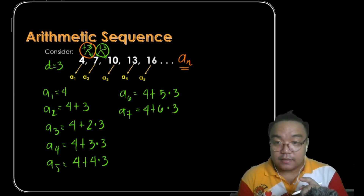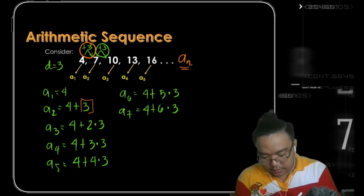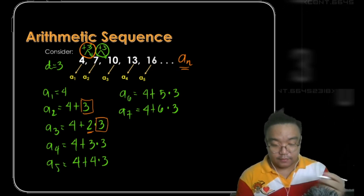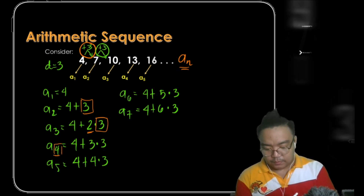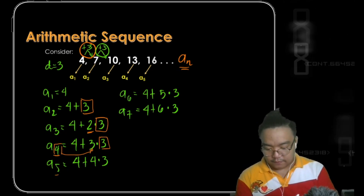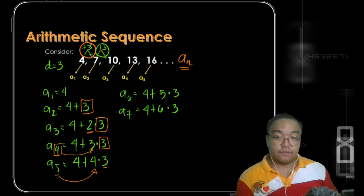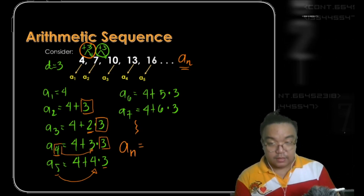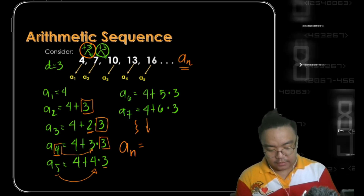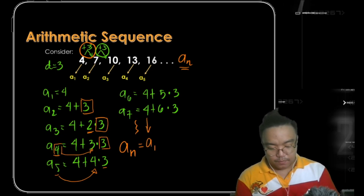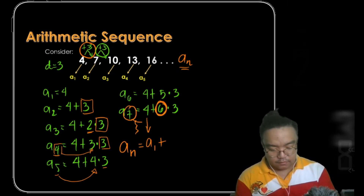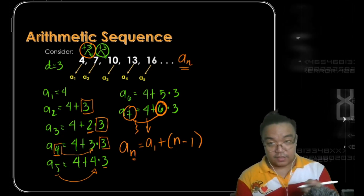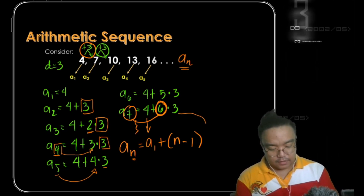Analyzing the pattern: for the third term we multiply the common difference once, for the fourth term three times, for the fifth term four times, and so on. So to get the nth term, we write our first term — which is 4 — plus n minus 1 times the common difference d, since the multiplier is always one less than the position of the term.